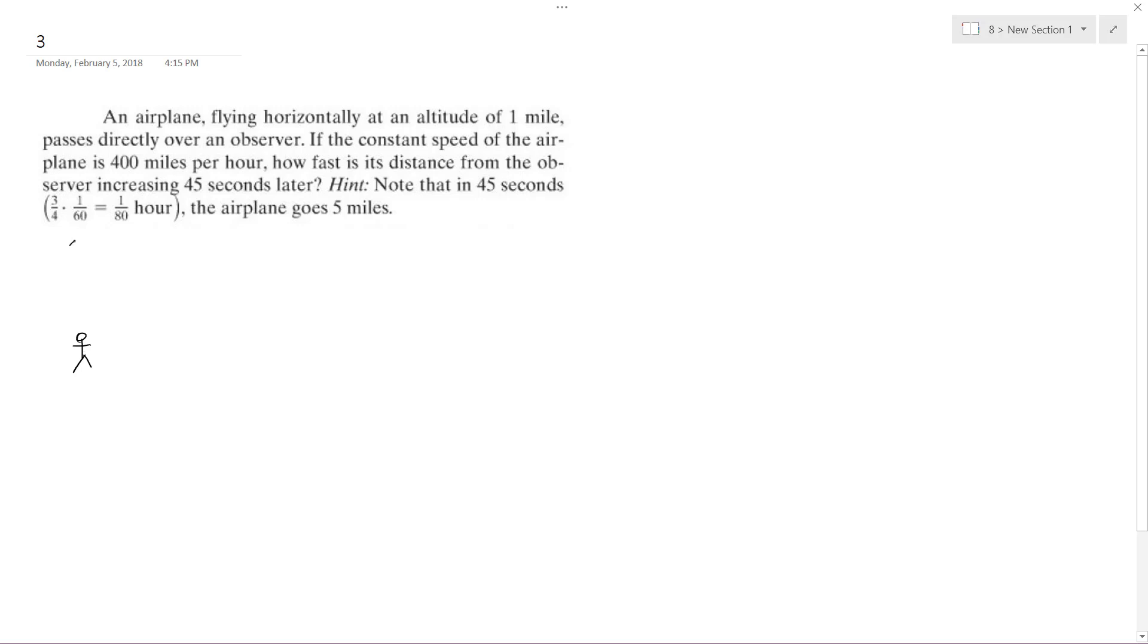Here's the plane and it passes directly over an observer, so this is one mile. And then 45 seconds later, they want to know exactly at the point, how fast is the distance between the observer and this person increasing at a given rate, 45 seconds later.